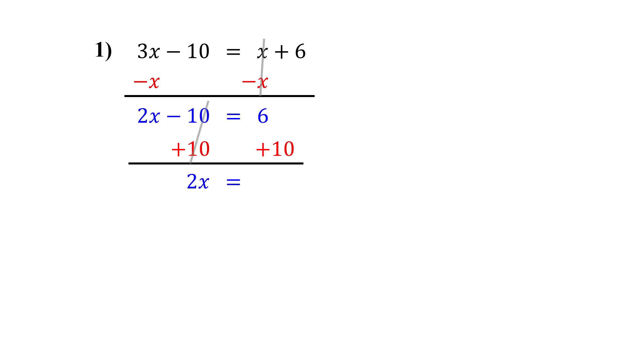On the right, we get 16. Now divide both sides by 2 to isolate x. The 2's cancel, leaving x. 16 divided by 2 is 8.